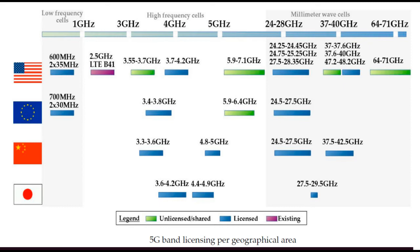In the USA, all millimeter-wave bands are implemented. In the EU, only 24.5–27.5 GHz is currently allowed — a 3 GHz wide band. China has allocated 24.5–27.5 GHz and 37–37.5 GHz, while Japan has 27.5–29.5 GHz. The key takeaway is that 5G covers a very wide spectrum, starting from sub-1 GHz, through the 2.5–6 GHz RF/microwave range, all the way to millimeter-wave frequencies up to 71 GHz — nearly 100 GHz.